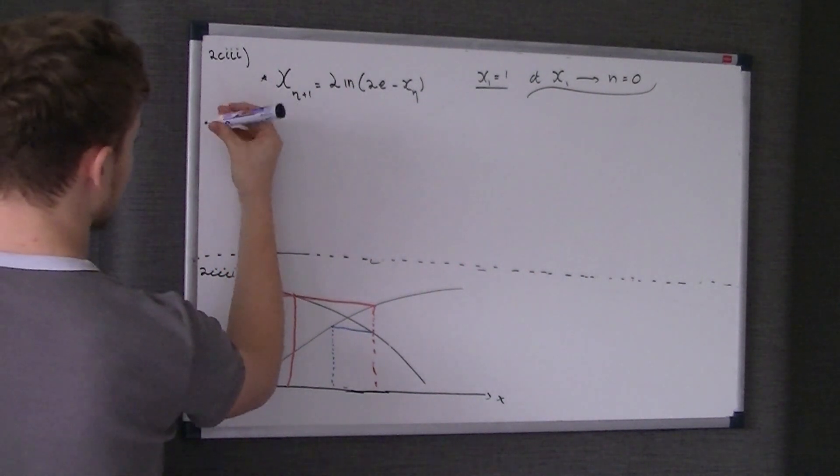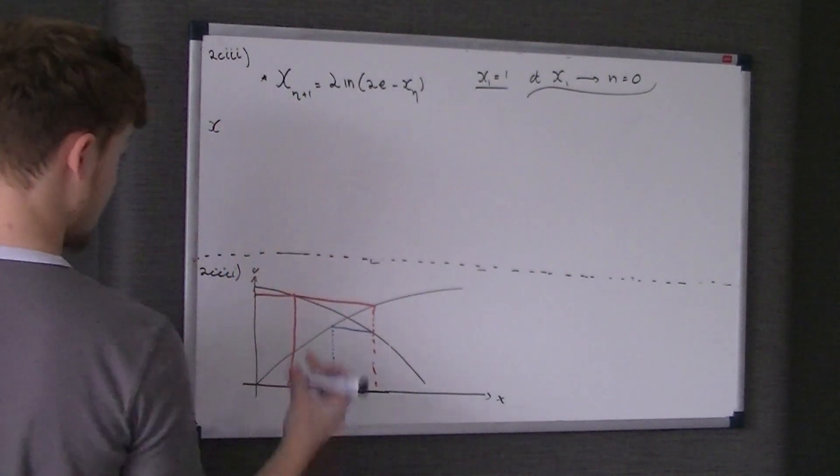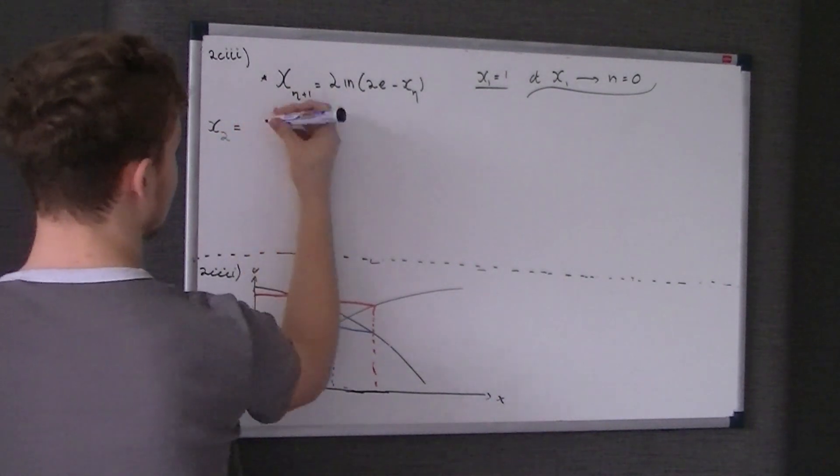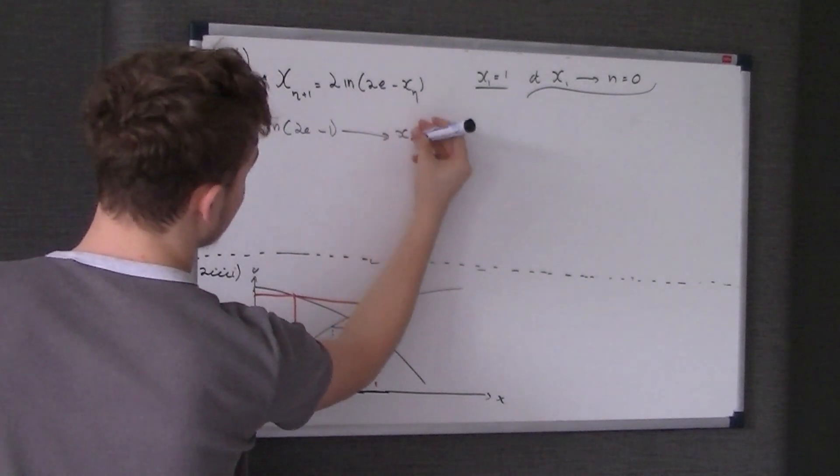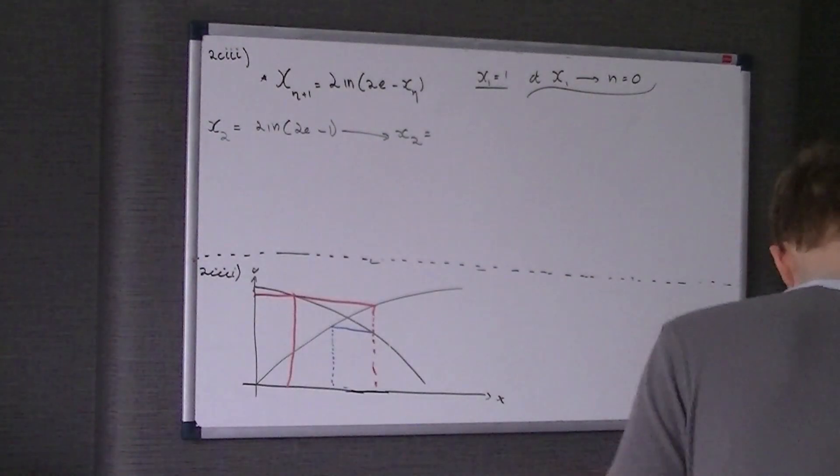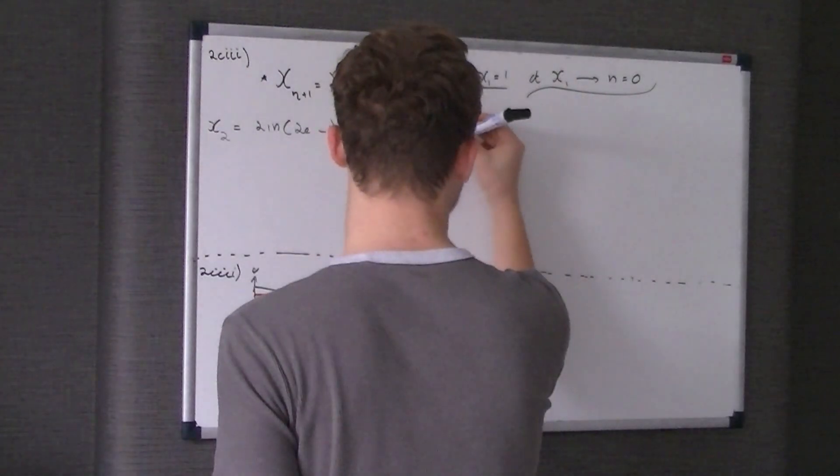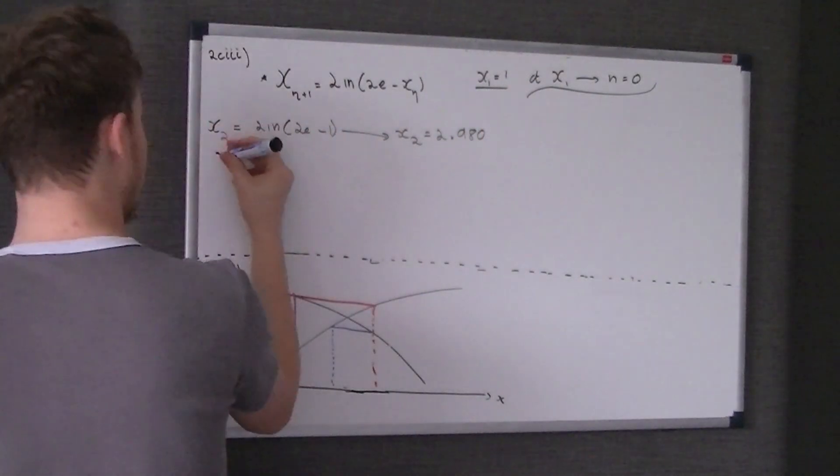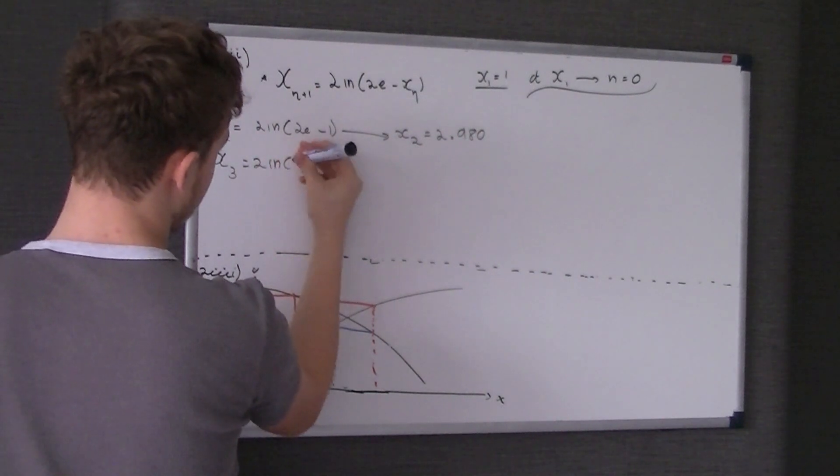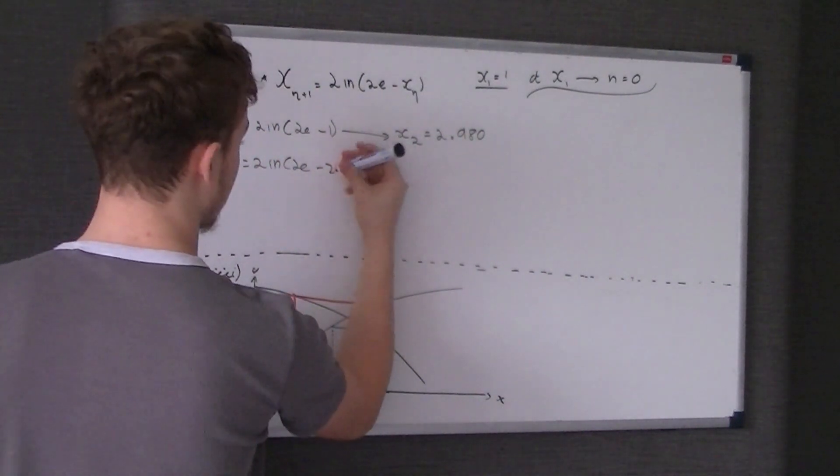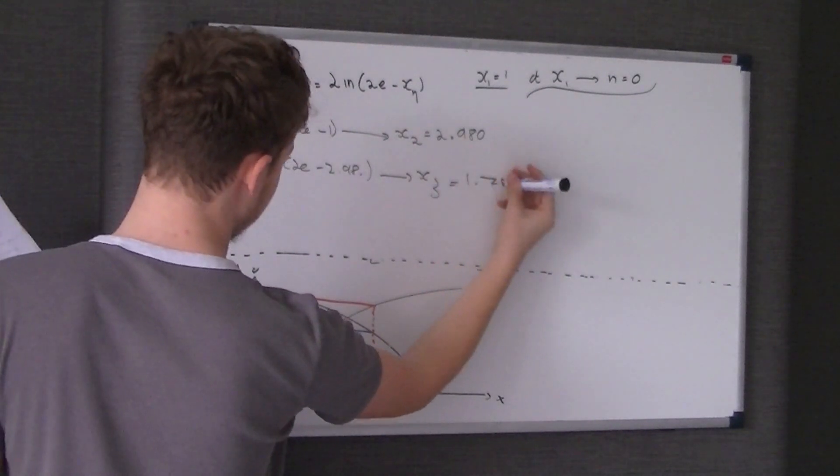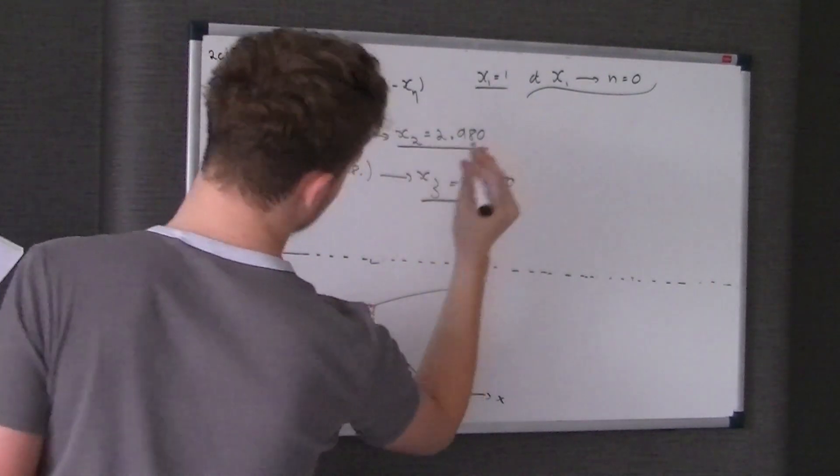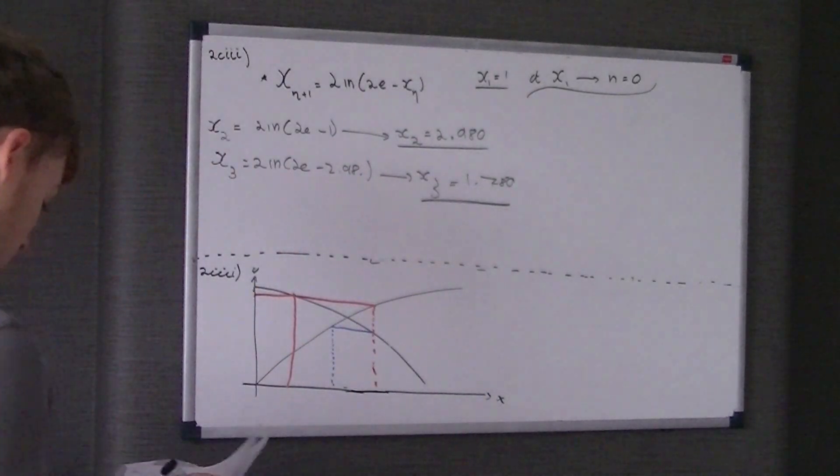Because there's only two iterations it's asking you to find, I just copy the answer into each equation and type out the equation again. So x2 is 2 times the ln of 2e take x1 or 1. Therefore x2 is equal to 2.980. x3 is 2 ln of 2e take 2.980, therefore x3 is 1.780. There are your two answers.